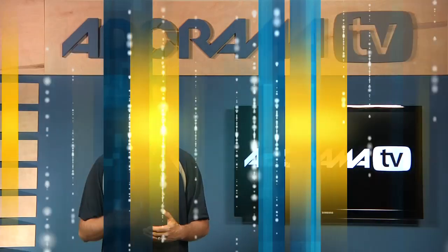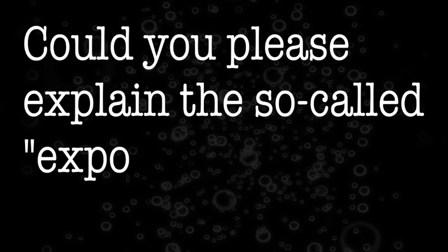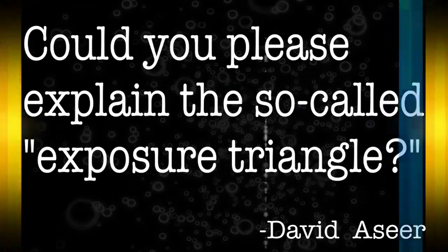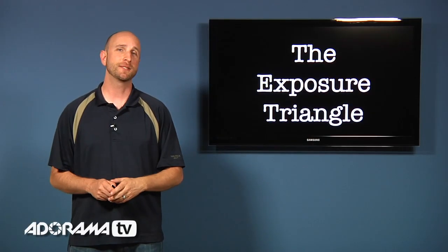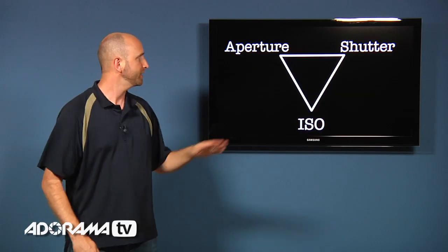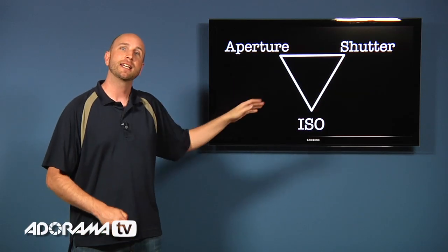This week we had a question from David A. Sear. And David wrote, could you please explain the so-called exposure triangle? Well the exposure triangle is made up of three things. It's the aperture, the shutter and ISO.